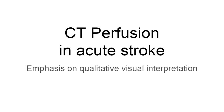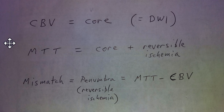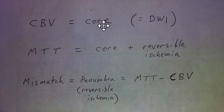Hello, I wanted to talk about how to interpret CT perfusion images in the setting of acute stroke, with an emphasis on qualitative visual interpretation as opposed to quantitative interpretation, although we will mention quantitative interpretation along the way also. The first and most important thing to remember is that CBV — that series, the CBV series — corresponds to the core infarct, which is the same as the DWI sequence on MRI. It's your irreversible core, irreversibly infarcted brain tissue.